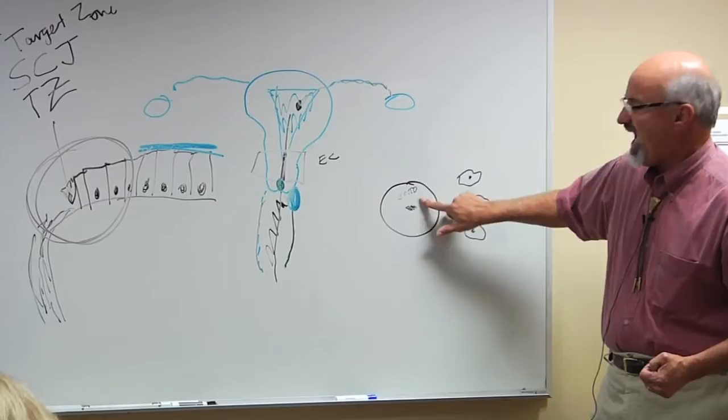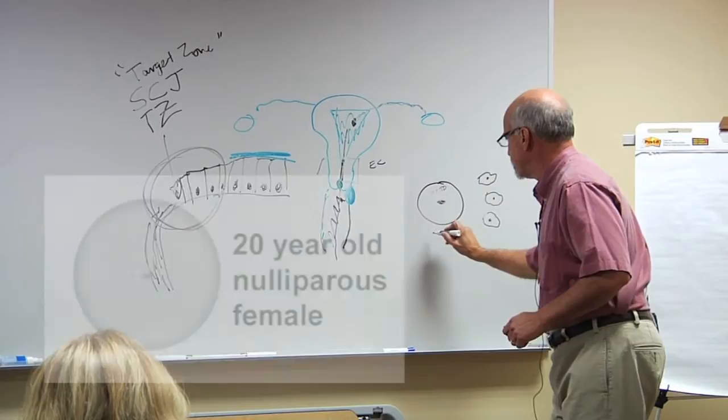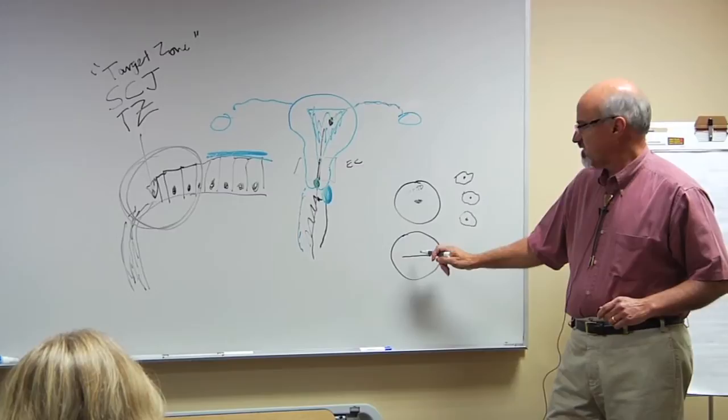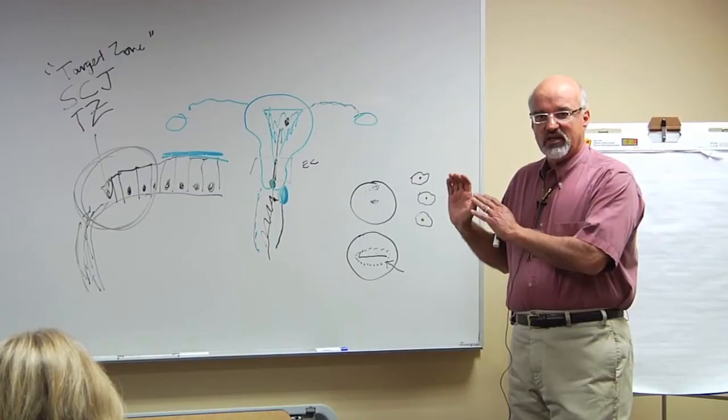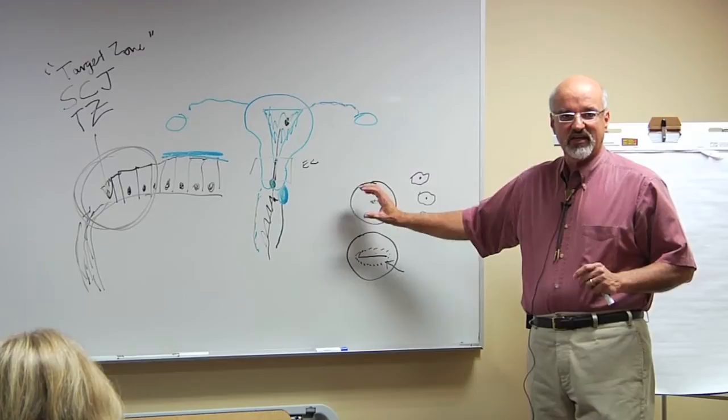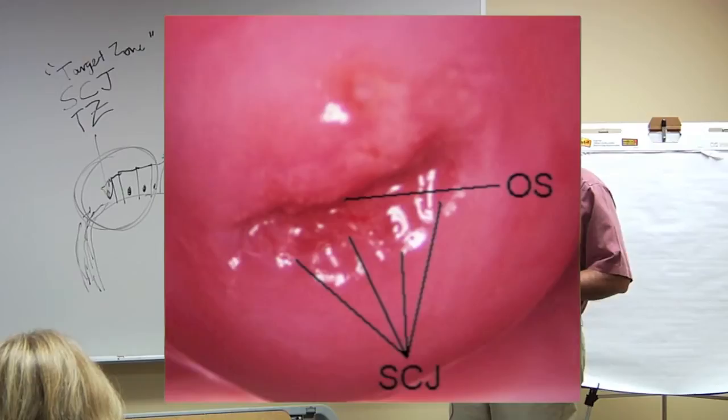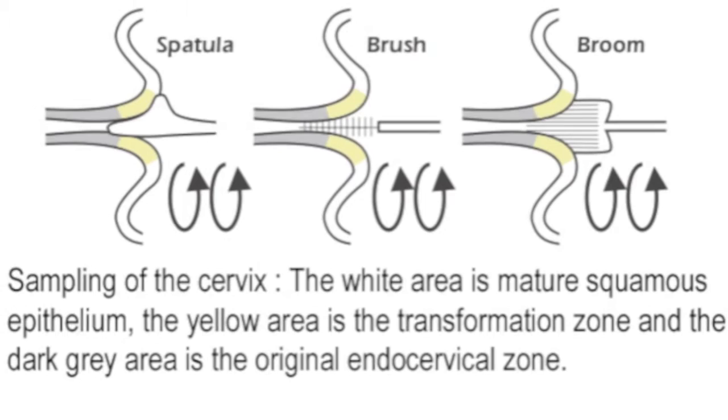I had a circle with a dot for the nulliparous cervix. For a woman that's had multiple children, the os is no longer a small little opening like this. It's usually a transverse opening. When a speculum is inserted and opened, the person performing a pap smear is making an assessment. What does the cervix look like? Where is the squamous columnar junction? Which instrument should I use to sample the squamous columnar junction, this very specific anatomic site?